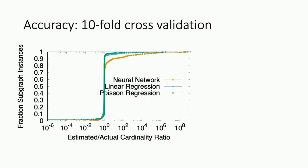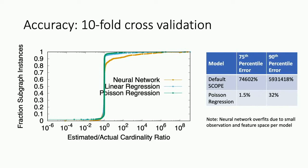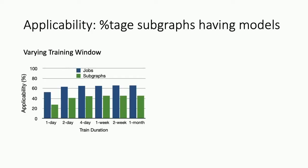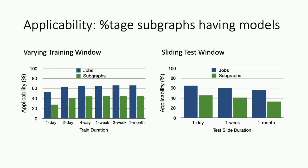Poisson regression was most accurate — the distribution is more exponential and it's non-negative, so it makes sense. When we do all of that, wherever we have models they are super accurate, very close to ideal. Orders of magnitude more accurate than the default. We can learn cardinality models for specific customers. For applicability, after two days of training approximately 65% of sub-graphs have models. We need to retrain approximately once a month to maintain that 65% coverage.